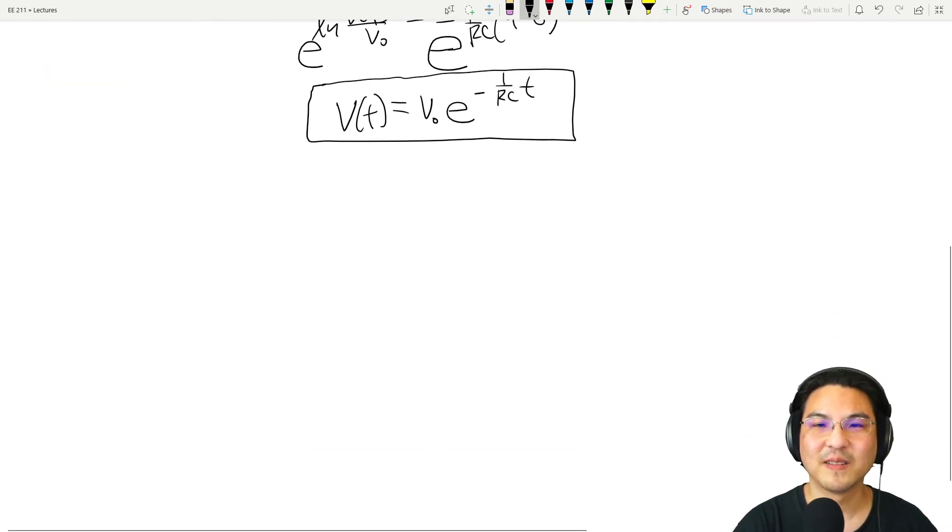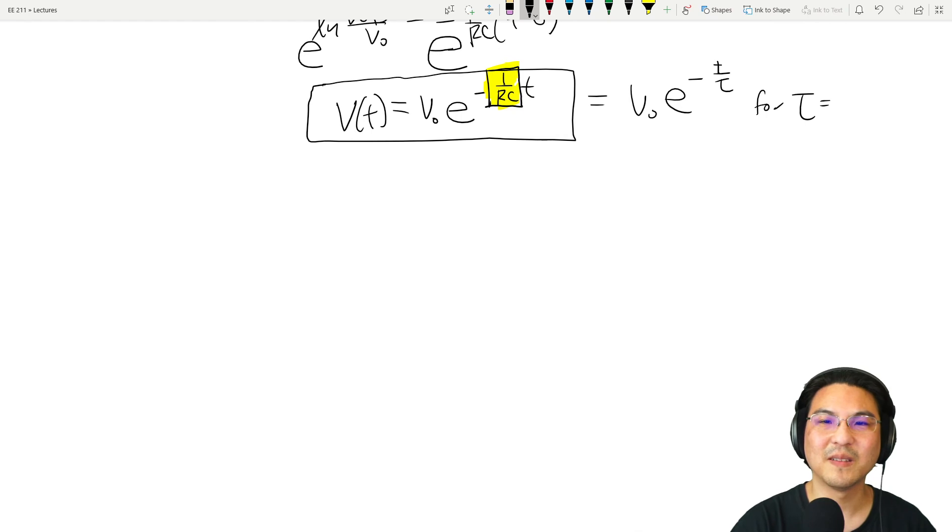And again, what's the time constant? Just look at whatever is sitting right here. Whatever is sitting there, take the reciprocal, and that is the time constant. So for this particular example, that's t over tau, for tau would be RC, right? Because it's the reciprocal of that.